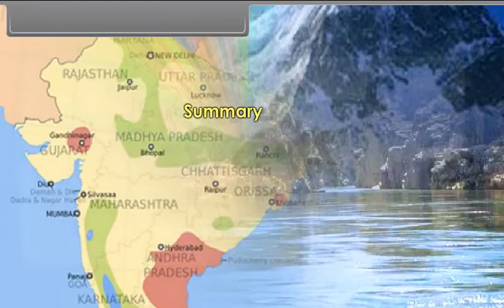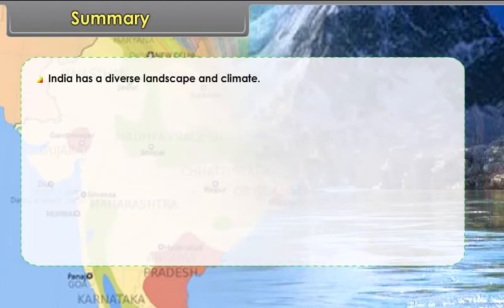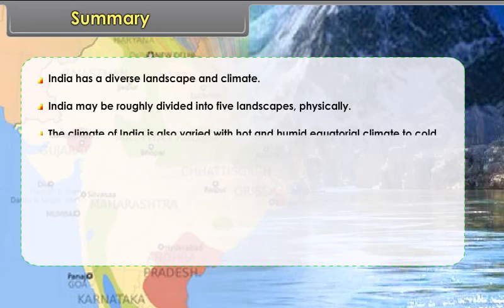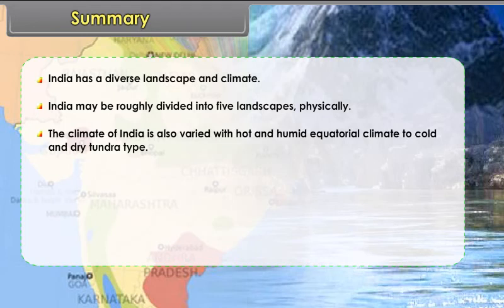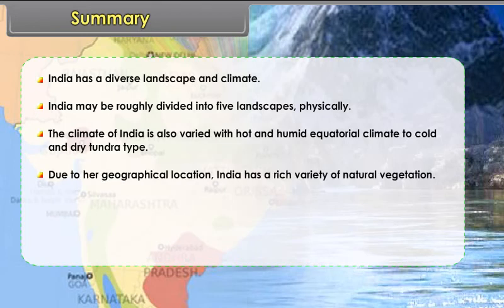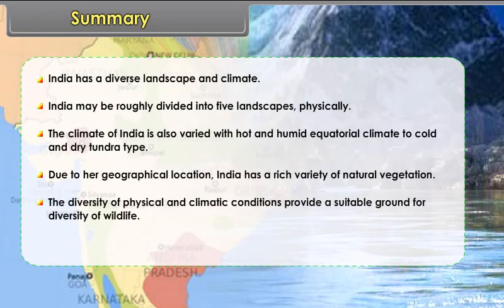India has a diverse landscape and climate, and may be roughly divided into five physical landscapes. The climate of India is also varied, ranging from hot and humid equatorial climate to cold and dry tundra type. Due to her geographical location, India has a rich variety of natural vegetation, and the diversity of physical and climatic conditions provides a suitable ground for diversity of wildlife.